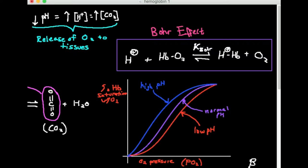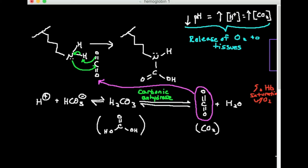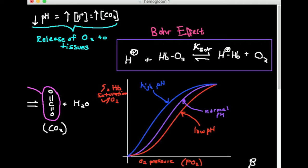I'm specifically talking about a low pH here. pH is the negative log of the hydrogen ion concentration. So a low pH corresponds to a high concentration of hydrogen ions, or H+. Because of an equilibrium describing the blood buffering system, a high hydrogen ion concentration also corresponds to a high carbon dioxide concentration. All three conditions — low pH, high H+, and high CO2 — cause a release of oxygen to the tissues.